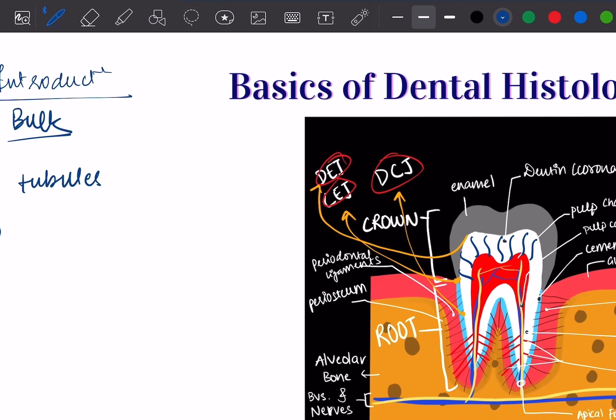It begins to form slightly before enamel. Dentine forms first and enamel forms second. So that is why dentine determines the shape of the tooth more importantly, that is the cusps and the ridges. It also decides the number of roots the tooth is going to have and the size of roots.